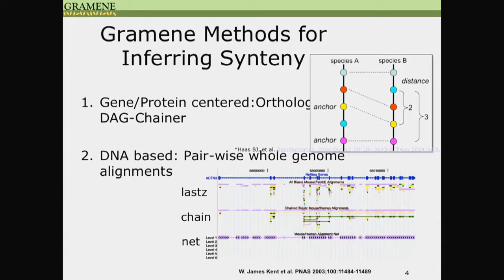In Gramene, we use two approaches to detect synteny blocks. The first approach is a gene or protein-based synteny build. The second approach is a DNA-based alignment. In the first approach, the unit of operation is genes. We use orthologous or homologous genes across species or duplicated segments, trying to identify the maximum region that shows co-linear order of the orthologous or homologous genes across the species.